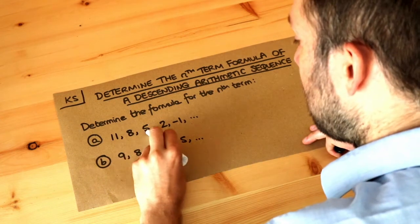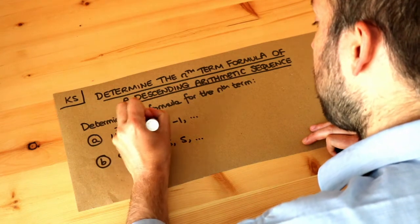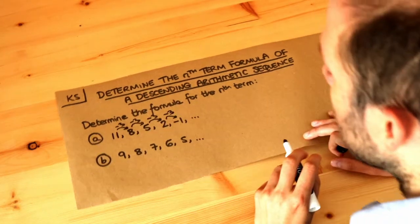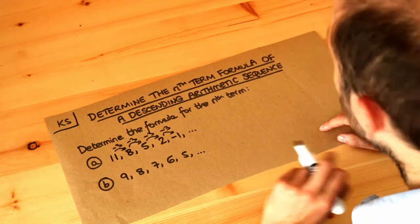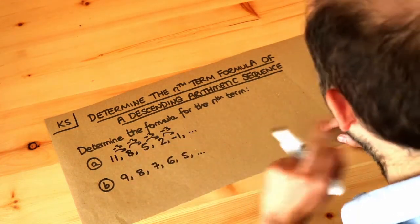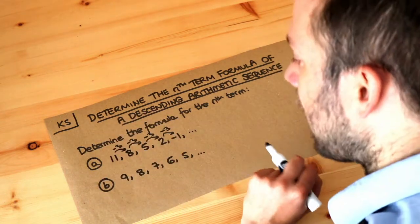So for example in this sequence we're subtracting three each time, they're going down by three. Now we saw a method for finding the nth term formula when the sequence was going up and just because they're going down this time the maths doesn't change. Just because we're dealing with negative or fractional values that doesn't break maths.